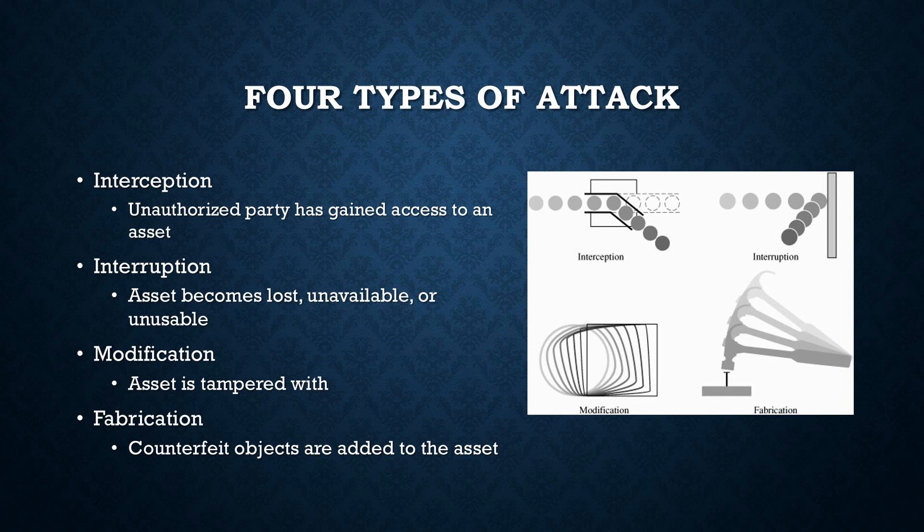The four types of attack. Interception is an attack to gain unauthorized access to a system. It could be simple eavesdropping on communications such as packet sniffing or just copying of information. Interruption is an attack on availability, such as a denial of service attack. An interruption attack aims to make resources unavailable.